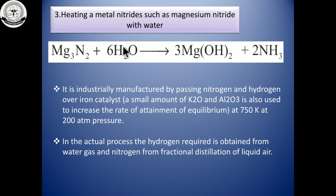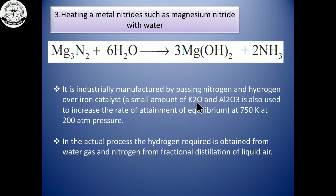In industry, ammonia is prepared on a large scale using iron as a catalyst to reduce the reaction time. Potassium oxide and aluminum oxide are used as promoters at 750 Kelvin and 200 atmosphere pressure. The actual process requires hydrogen from water gas and nitrogen from the fractional distillation of liquid air.